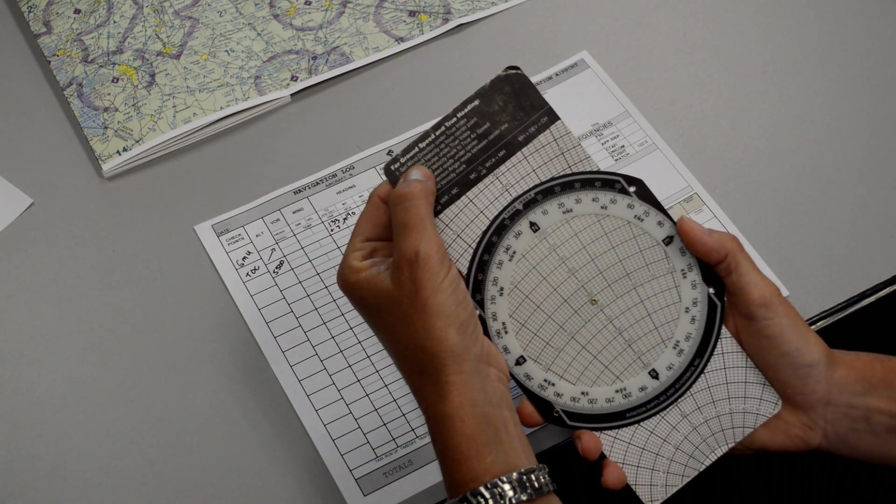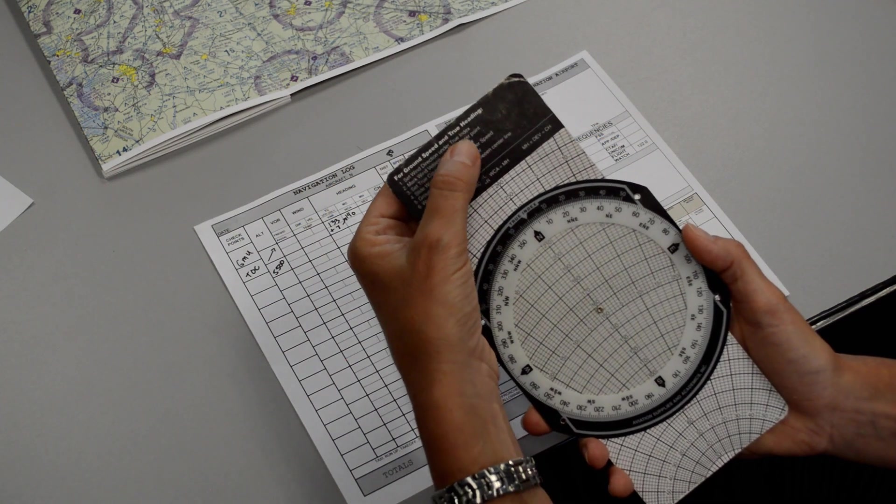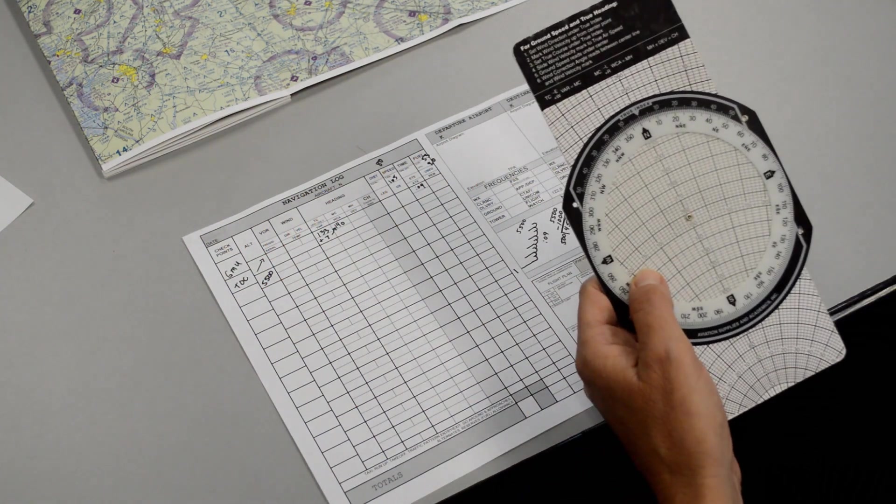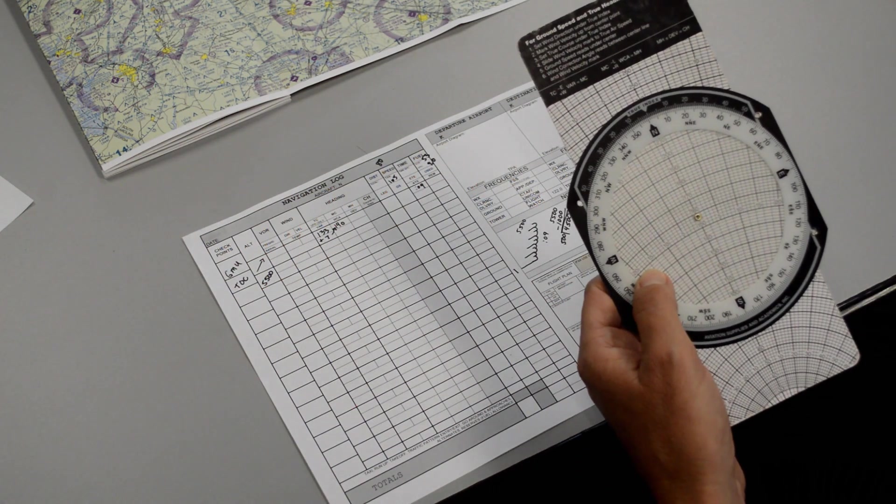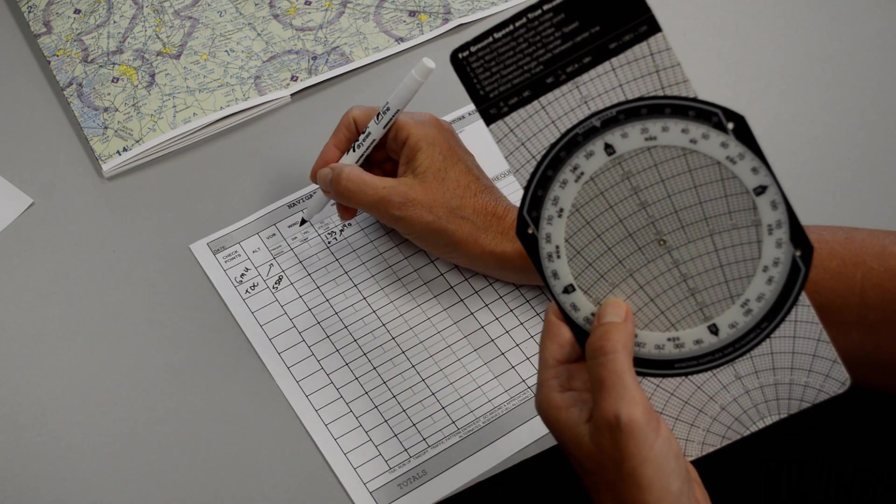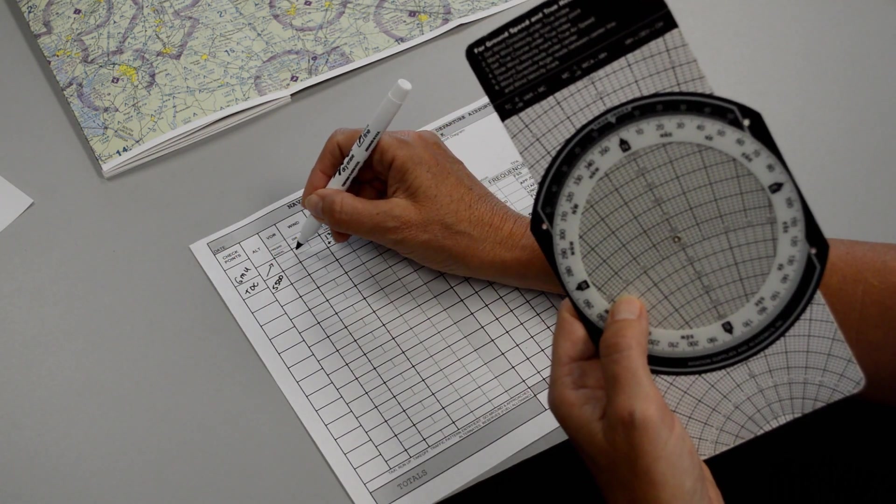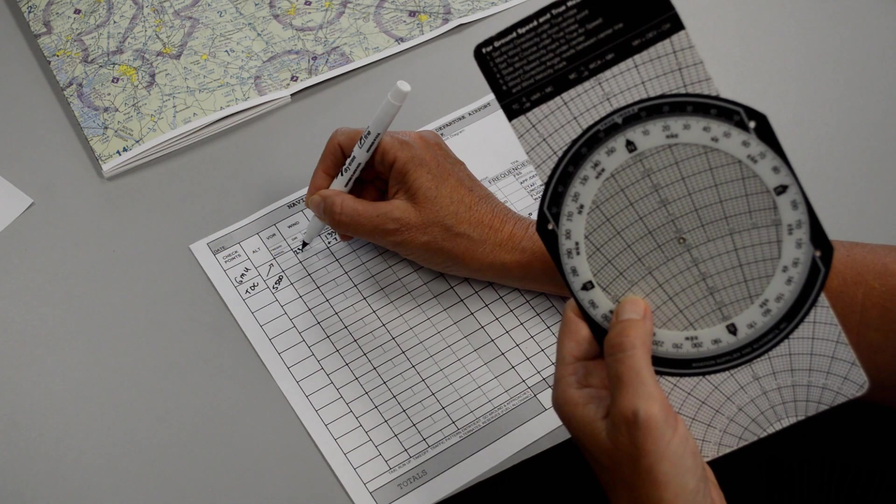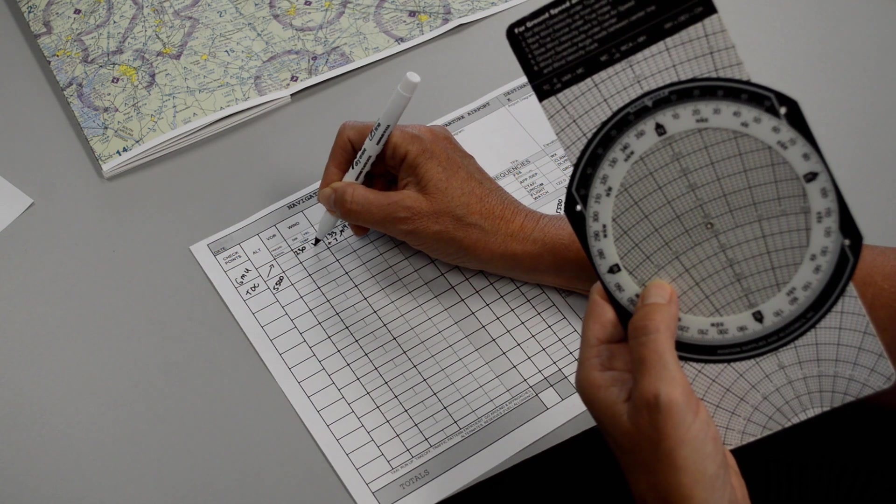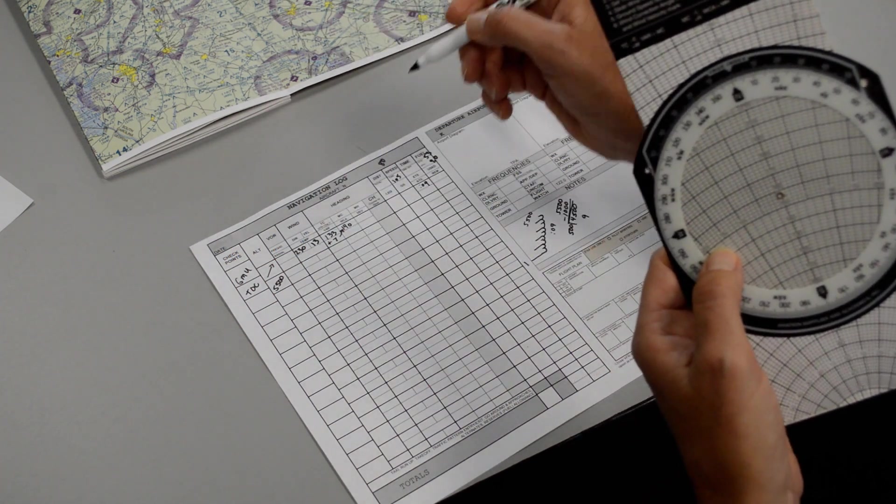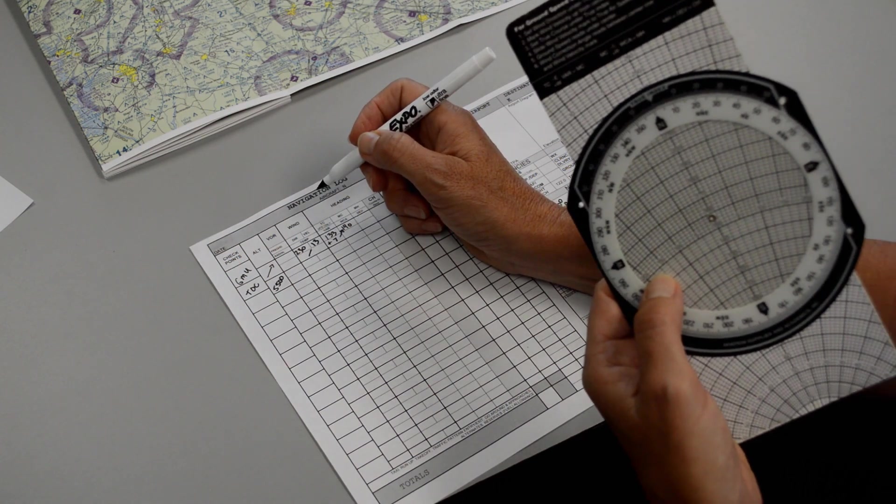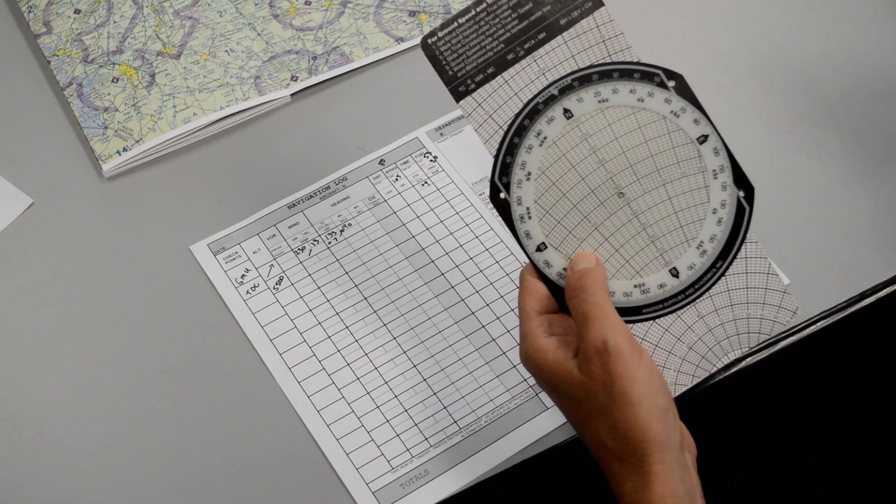It says first, set wind direction under our true index. Now we're going to calculate out our climb. So for our climb, we said the winds were coming out of 230 at 15. So for the climb portion, the wind direction was 230. The velocity we were using was, actually it was 13, sorry. And then the temperature is going to be changing throughout our climb, so we're not going to put anything there.